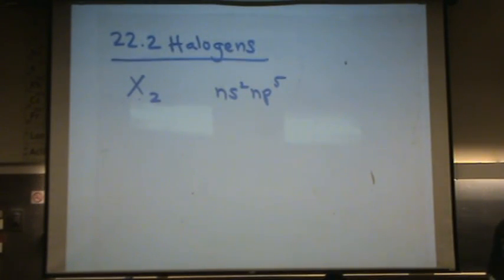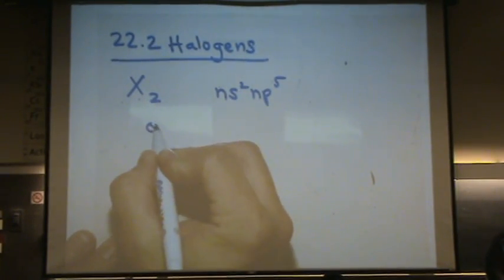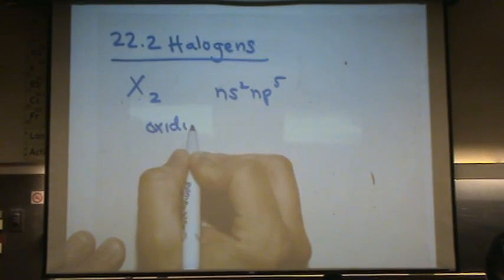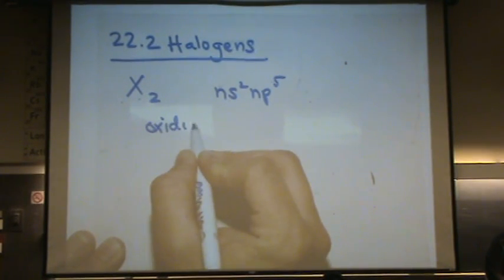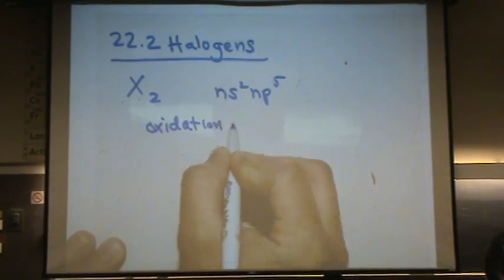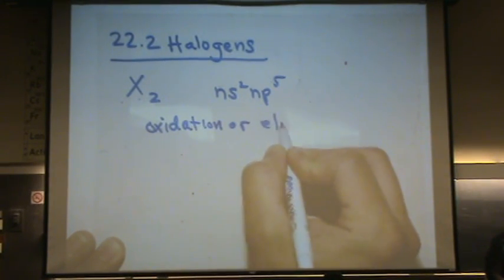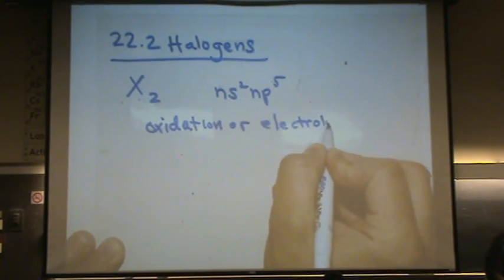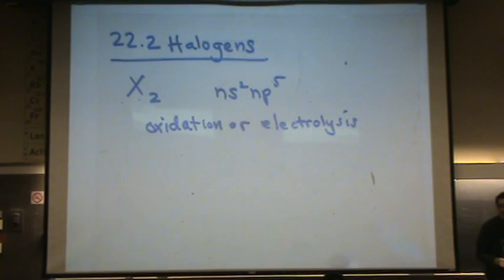These are generally produced by two processes, industrially, oxidation, or electrolysis. Is electrolysis spontaneous or non-spontaneous? Non-spontaneous, so that you must add an external source in order to produce whatever you're producing.